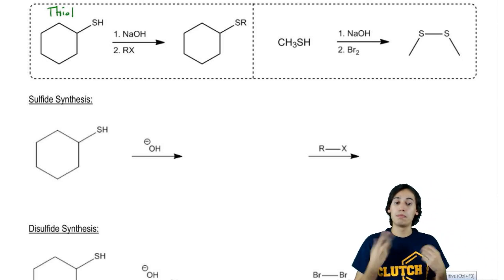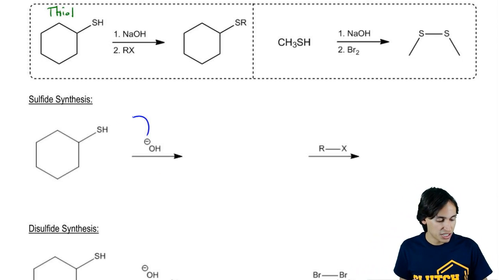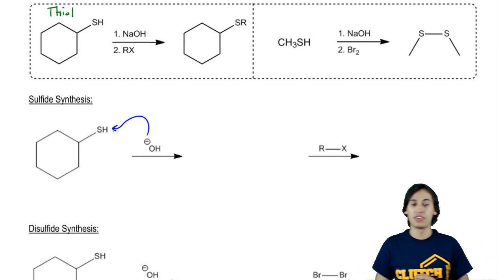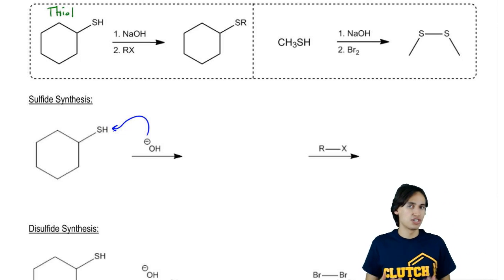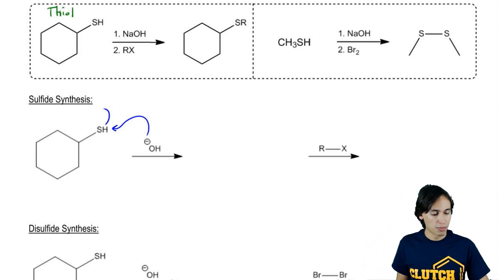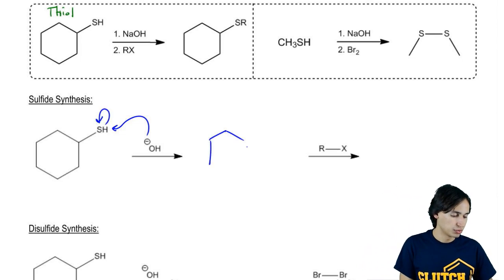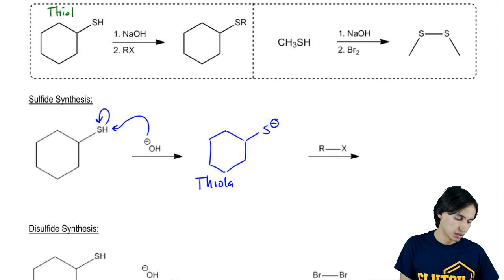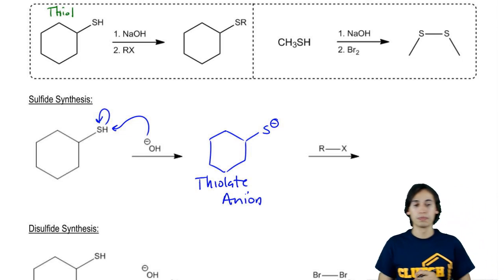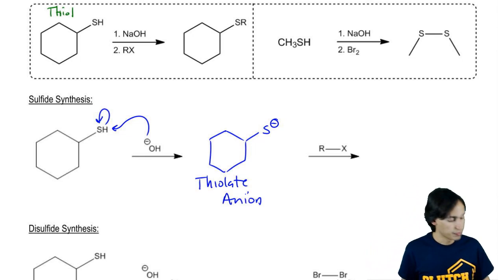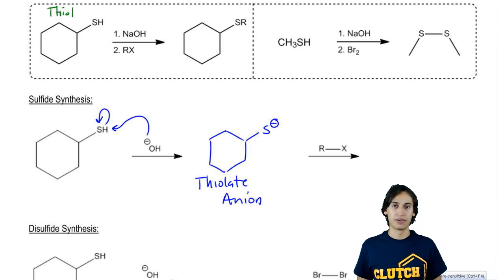So in my first step, my base is going to grab the acidic hydrogen of my thiol. Obviously the hydrogen doesn't want to have two bonds. So I make a bond, I break a bond and I wind up getting – what is this called? My negative charge on my S. This is my thiolate anion. So I've got my thiolate anion.